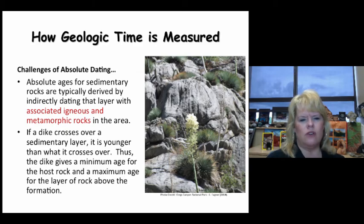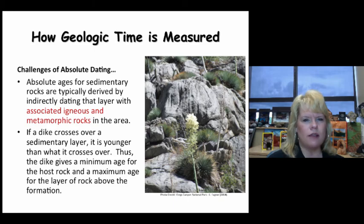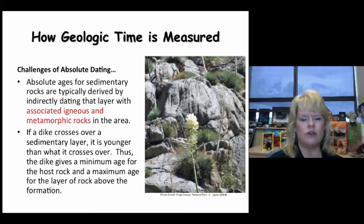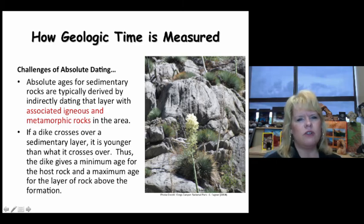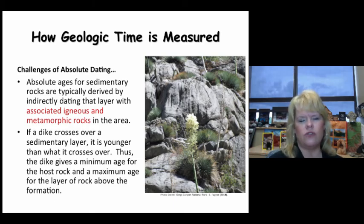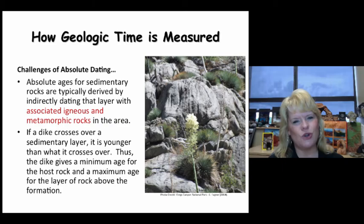Absolute ages for sedimentary rocks are typically derived by looking at igneous or low-grade metamorphic rock layers above and below them. If a dike crosses over a sedimentary layer, we know from the law of cross-cutting relationships that the dike is younger. The dike gives a minimum age for the host sedimentary rock and a maximum age for the layer above. It's like creating a sandwich age, placing the sedimentary rock between two datable igneous age markers.